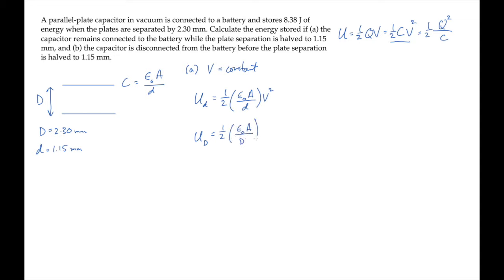If we divide these two equations, everything constant in the numerator and denominator cancels. And we can solve for the new energy stored in the capacitor. And it works out to the ratio of the separations, large D over little d times the original energy.